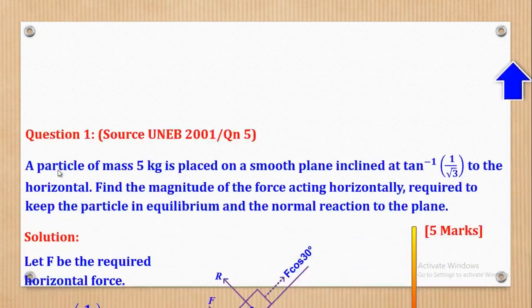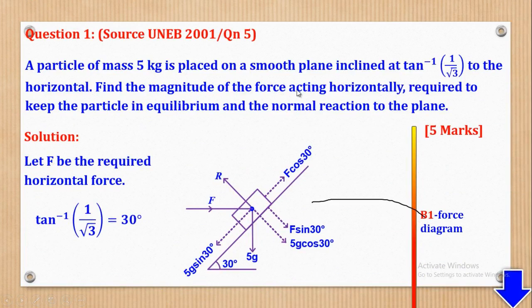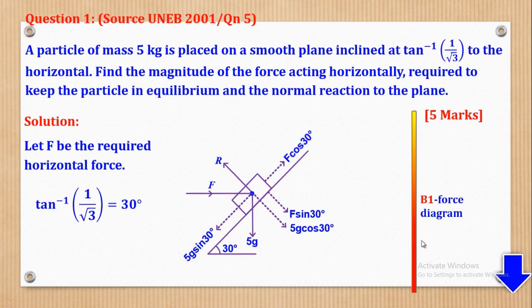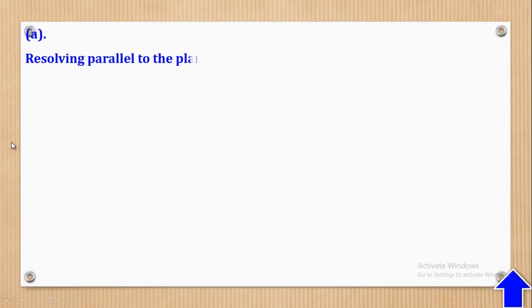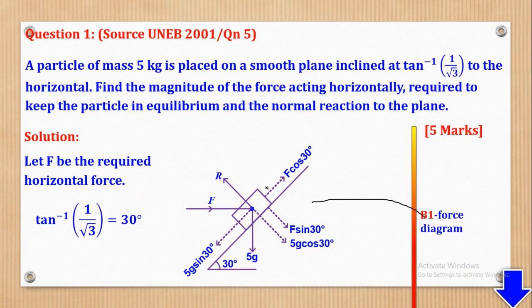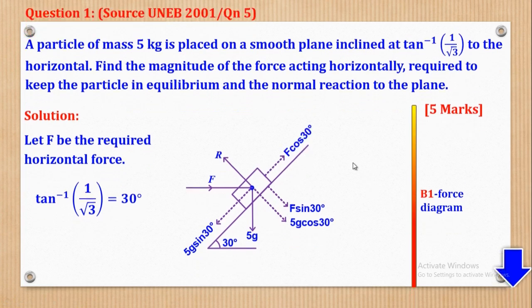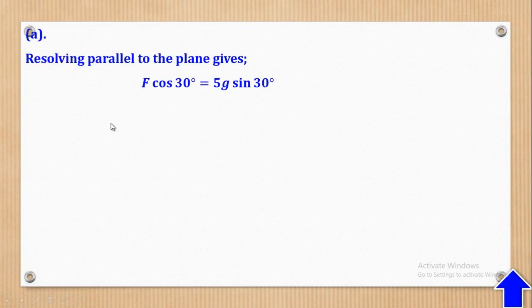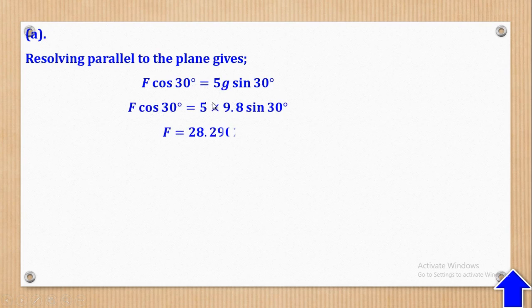For part A, they asked for the magnitude of the force acting horizontally, so they want the value of F. Resolving parallel to the plane, we realize that 5G sin 30 will be equal to F cos 30 degrees. Therefore, if F cos 30 equals 5G sin 30, when I substitute for G and make F the subject, F will be 28.2902 Newtons.